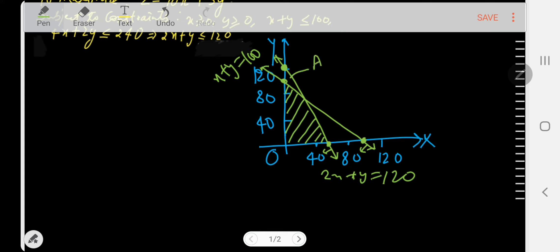Now we shall be taking the corner points. Let me call this point A, this point B, and this point C. In order to obtain point B, we will solve these two equations. Once we subtract, x will be 20, and if x is 20, y will be 80. Here x is 0 and y is 100 for point A, and for point C, x is 60 and y is 0.